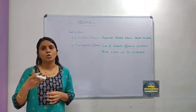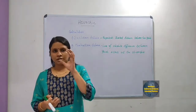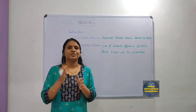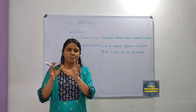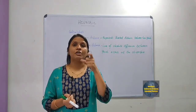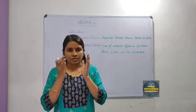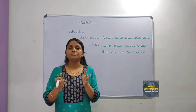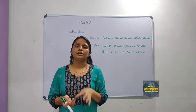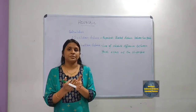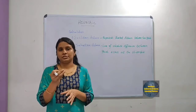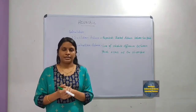In informed search, we are provided with some information, and that information we call heuristic. The main application of artificial intelligence is problem solving, and heuristic methods are designed to solve problems more quickly and more easily. When applying heuristic techniques to search algorithms, at each branching step it evaluates the available information and makes a decision on which branch to follow.